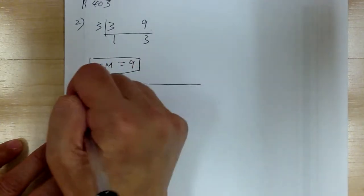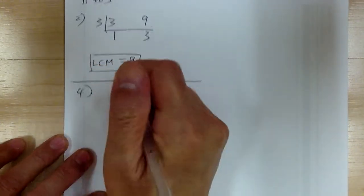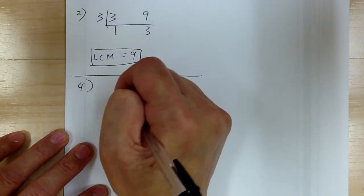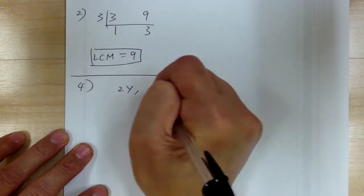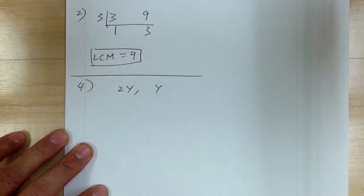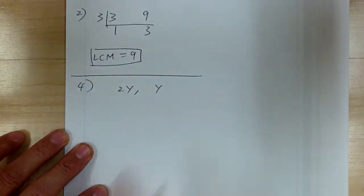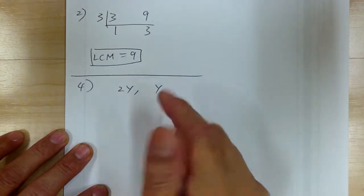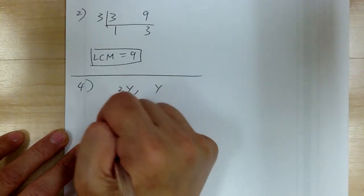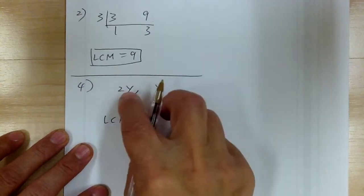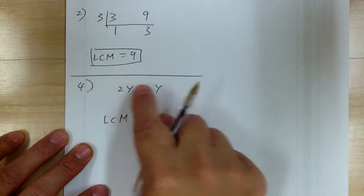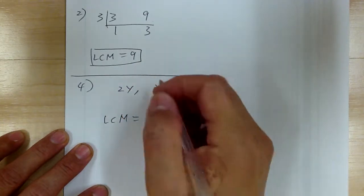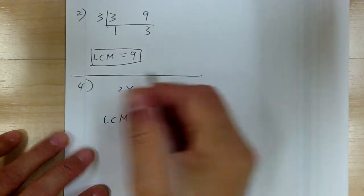Let's go to number 4. In number 4, you have 2y and y. This one is so simple, you don't really need to do that. Look at the numbers 2 and 1. So first you do the number: 2 and 1 is 2. And you have y and y, so it would be just y.